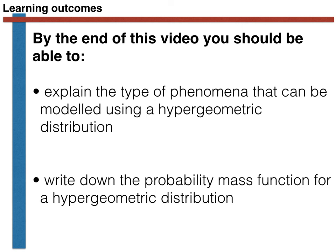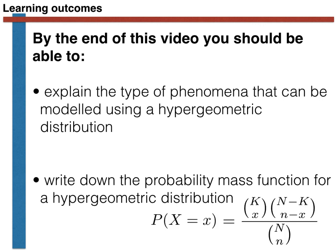The aim of this video was to explain what could be modelled using a hypergeometric random variable. We have seen throughout the video that what we can model is sampling without replacement. We also wanted to derive an expression for the probability mass function for this type of random variable. Hopefully these two ideas are now clear to you, but if they are not, try watching the video again to see if you understand it on the second pass through. Thank you for your attention.